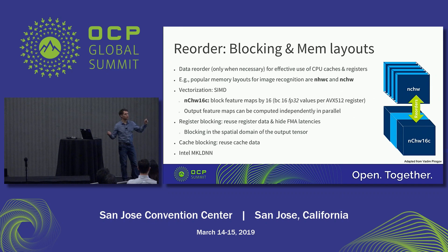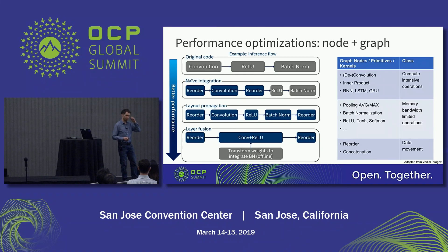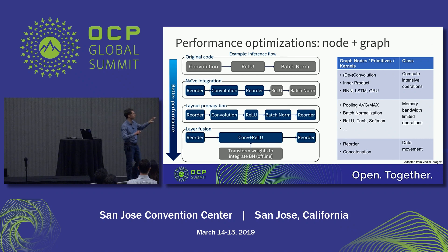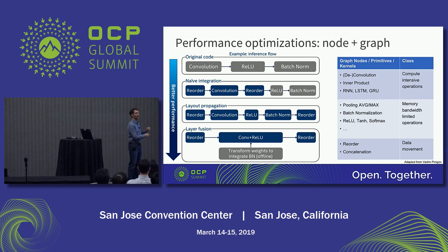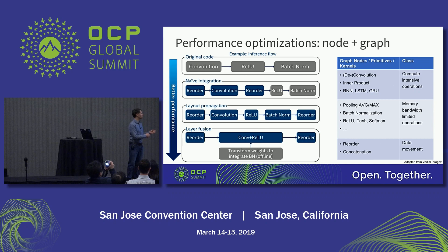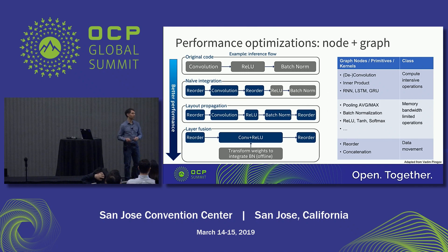In addition to node-level optimizations, we also do graph-level optimizations. In the original code you might have three operations: convolution, ReLU, and batch normalization. A naive integration would reorder data, do the convolution, then reorder back into the framework's format. A better approach is to reorder once, do as many operations as possible in MKL DNN format, then reorder back at the end. An even better approach is layer fusion.